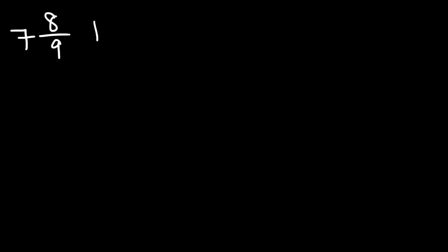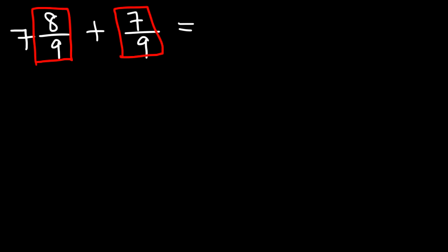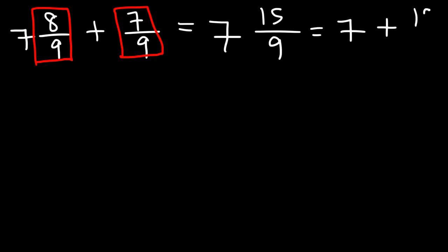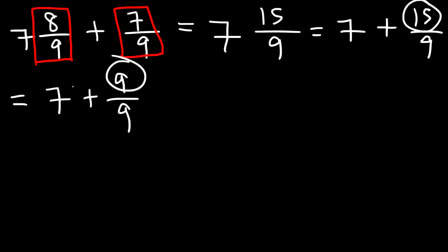Now let's try this one: 7 and 8 over 9 plus 7 over 9. Let's begin by adding 8 over 9 with 7 over 9. 8 plus 7 is 15, so once again we have an improper fraction. Let's rewrite this as 7 plus 15 over 9. Now let's break down this fraction into two smaller fractions, one of which has to be 9 over 9 because that's equal to 1. 15 minus 9 is 6, so the missing fraction has to be 6 over 9.